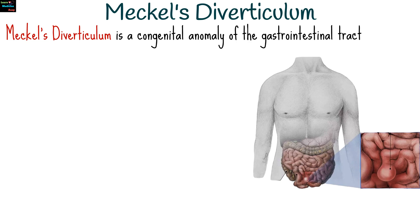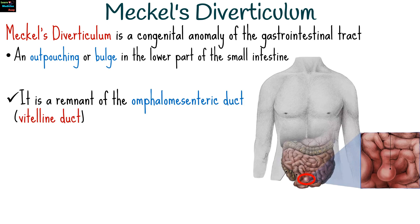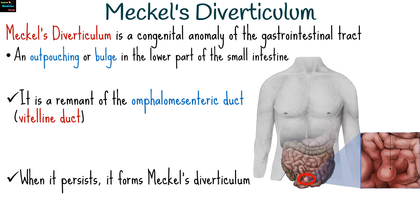Meckel's diverticulum is a congenital anomaly of the gastrointestinal tract, specifically an outpouching or bulge in the lower part of the small intestine. It is a remnant of the omphalomesenteric duct, also known as the vitelline duct, that is present during fetal development but usually disappears before birth. When it persists, it forms Meckel's diverticulum.